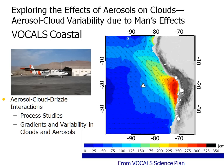From the VOCALS perspective, there are natural sources and man-made sources of aerosols. This is a MODIS image showing the droplet concentrations in the stratocumulus cloud. You can see this area which looks as though it's being affected by a couple of things: Santiago has a source of aerosols, and there are also copper smelters along the coast. It was speculated before VOCALS that they were contributing to aerosols and modifying the clouds in that area.